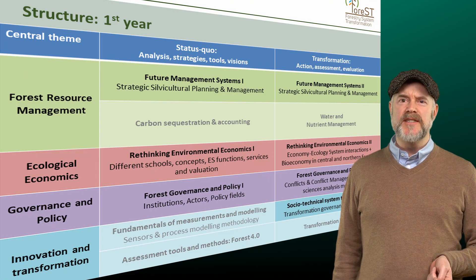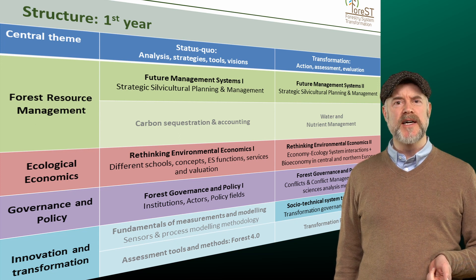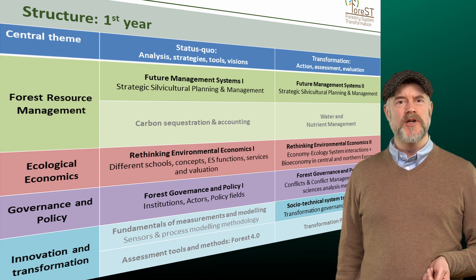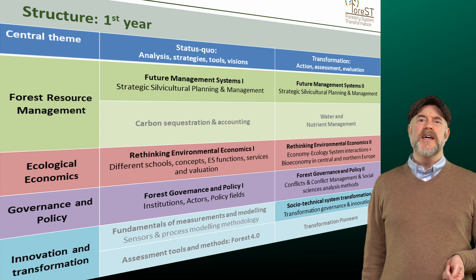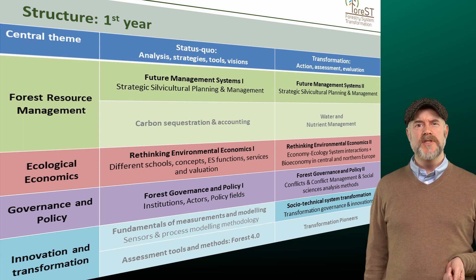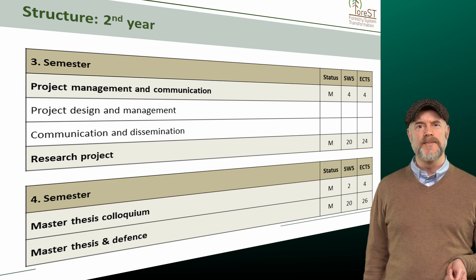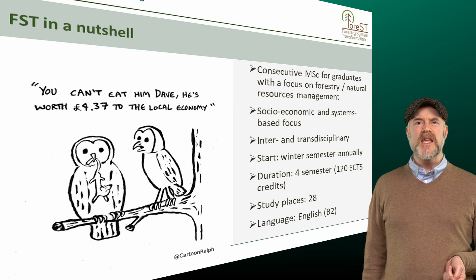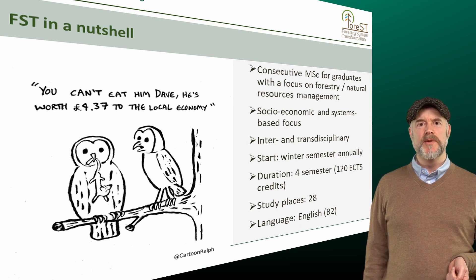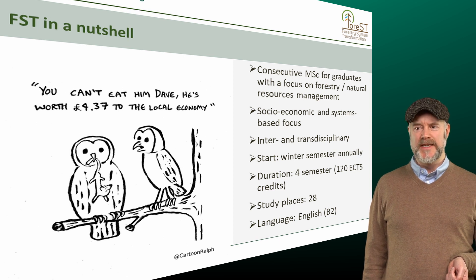FST is a consecutive master program which requires from you a background in forestry, agriculture, environmental sciences, or any other kinds of natural resource management. The study program is deeply inter- and transdisciplinary. It is four semesters in duration: two semesters of different modules covering these four dimensions, a third semester as a project semester, and the fourth semester dedicated to your master thesis. The program is entirely in English, requiring a B2 level, and we have about 28 study places. It's a very international program with nearly all major countries represented.